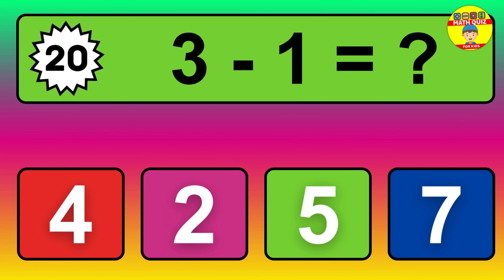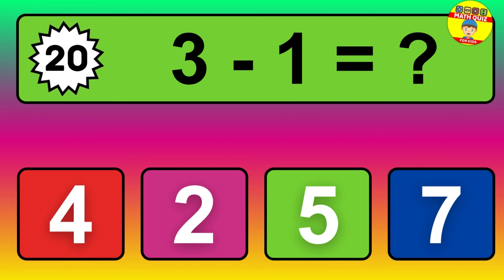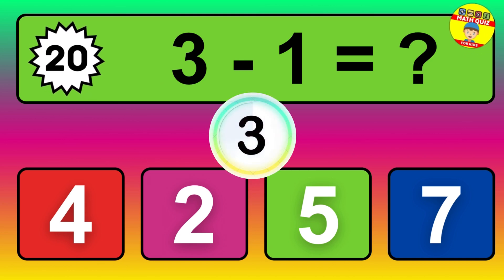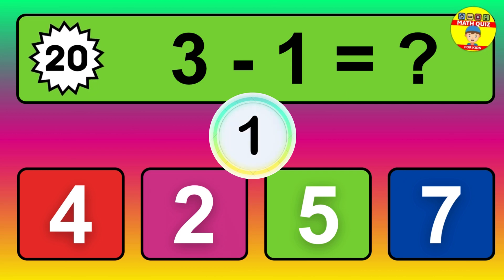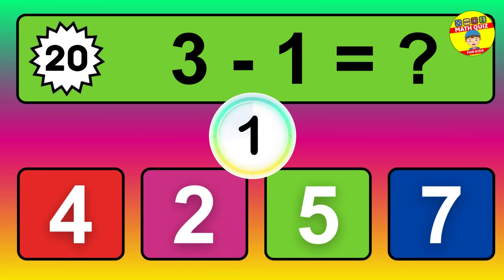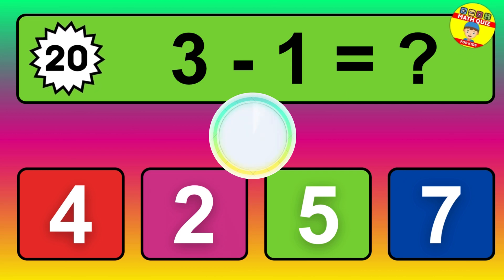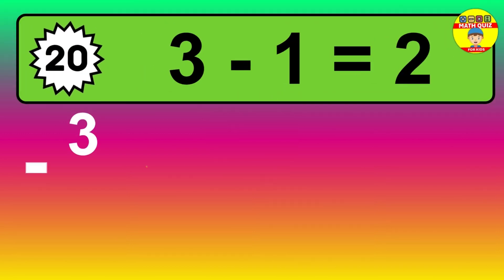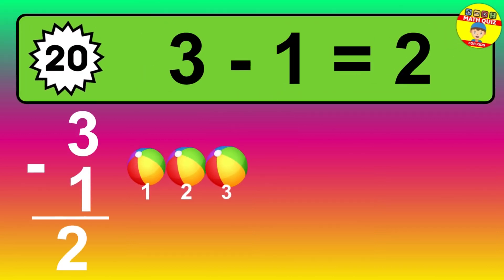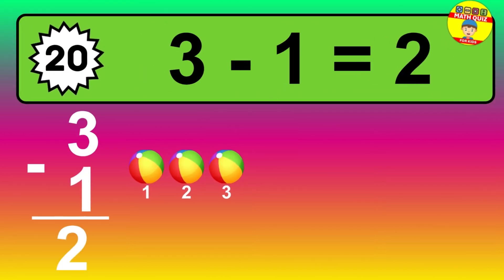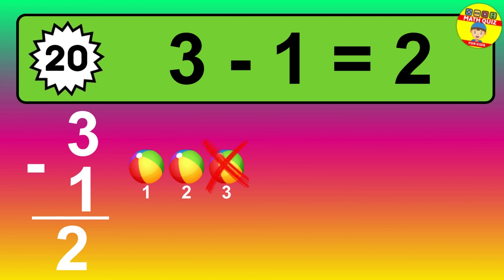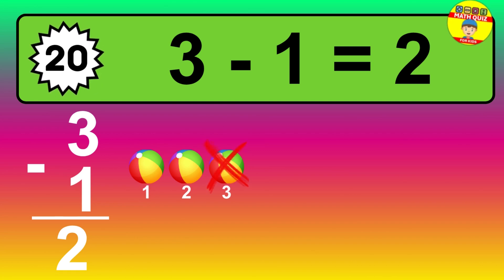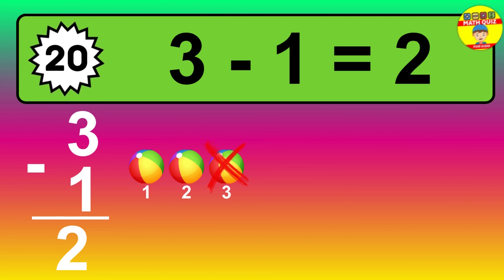Question twenty: three minus one equals what? So the answer is three minus one is two. Let's count it. One, two.